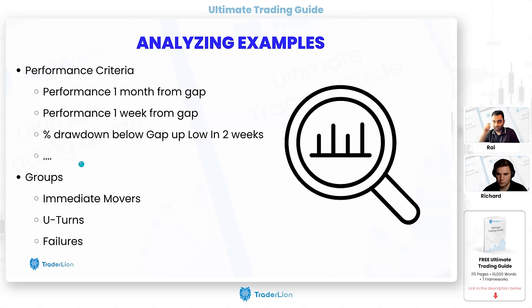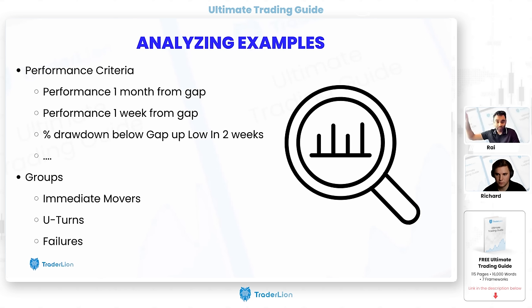With respect to performance criteria — don't expect the studies you do historically to dictate your actions in real time. You could say on average they move up this much, but there's always going to be real-time scenarios that will not result in that. Don't go to that extreme. This is giving you the probabilities of that happening — it's not saying the probabilities are 100%. So make a clear distinction in your thought process between studying historical results and applying them in real time.